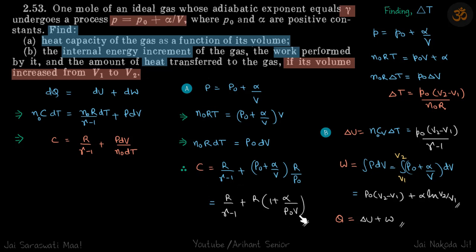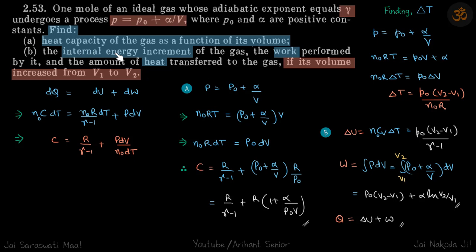As you can see, the heat capacity is not constant, so when finding heat we cannot simply multiply by n₀·ΔT to get the answer — we cannot do that because C is variable. Now let's move on to the other parts: internal energy and work.